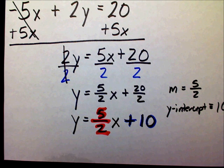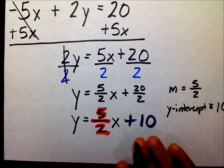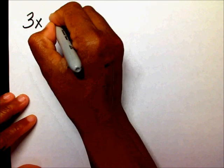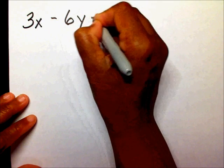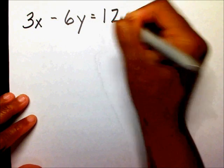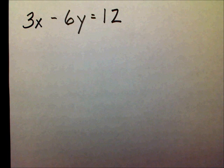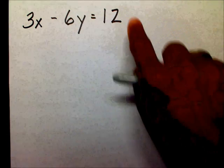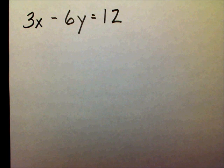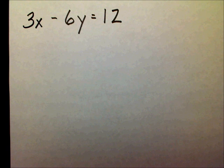Let me let you work one. I want you to find the slope and the y-intercept. Let's go with 3x minus 6y equals 12. Please pause the video and change the standard form into slope-intercept form, then identify the slope and the y-intercept.